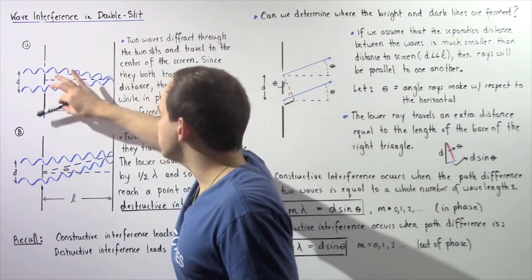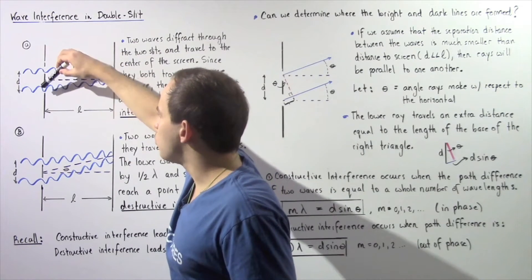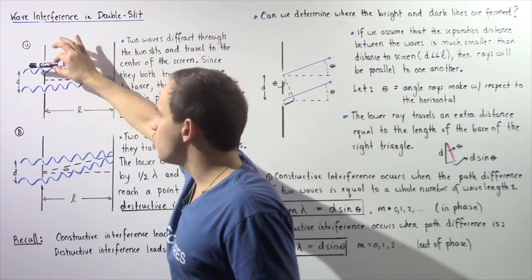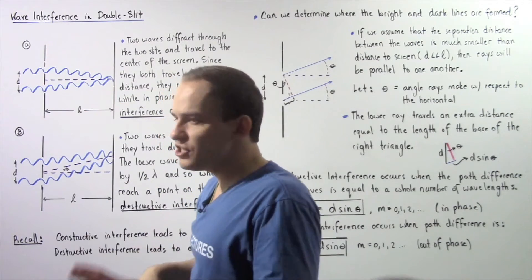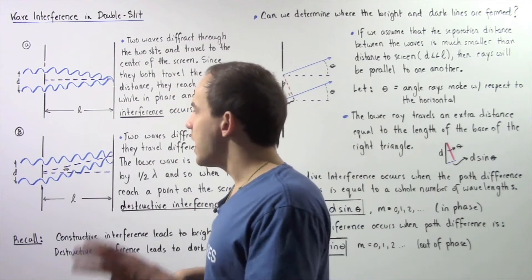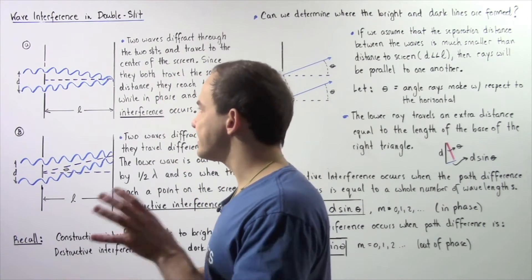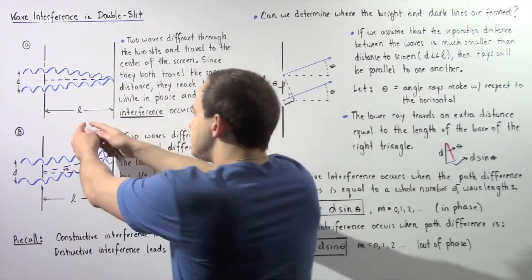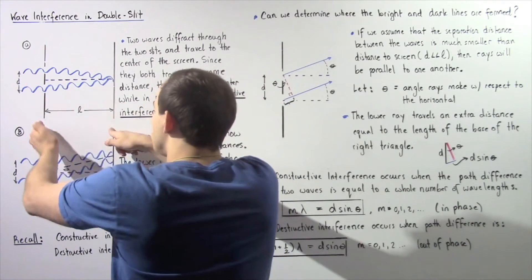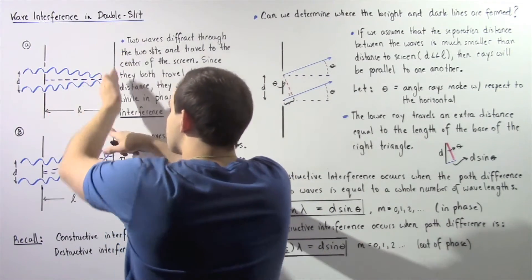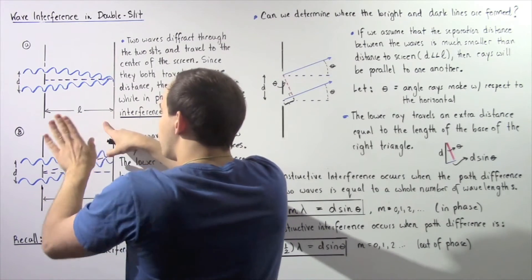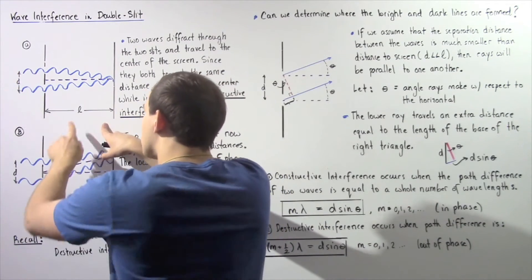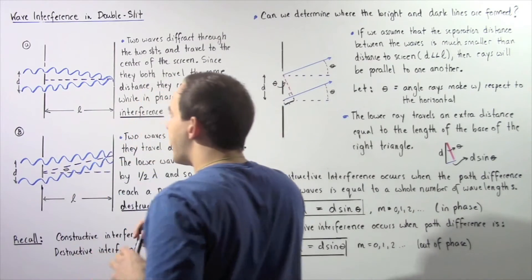We have our double slit, slit number one and slit number two. These two waves initially begin in phase and are separated by distance d. The distance between this double slit and the screen is given by L, and we're assuming that d is much smaller than L.